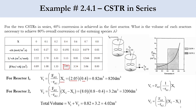For the second CSTR: V2 = [FA0 / (-rA2)] × (X2 - X1). The pattern is: first reactor uses X1, second uses (X2 - X1), third uses (X3 - X2), and so on. FA0 / (-rA2) at X2 = 80% corresponds to 8, so V2 = 8 × (0.8 - 0.4) = 3.2 m³ (3200 dm³). Total volume = 0.82 + 3.2 = 4.02 m³.